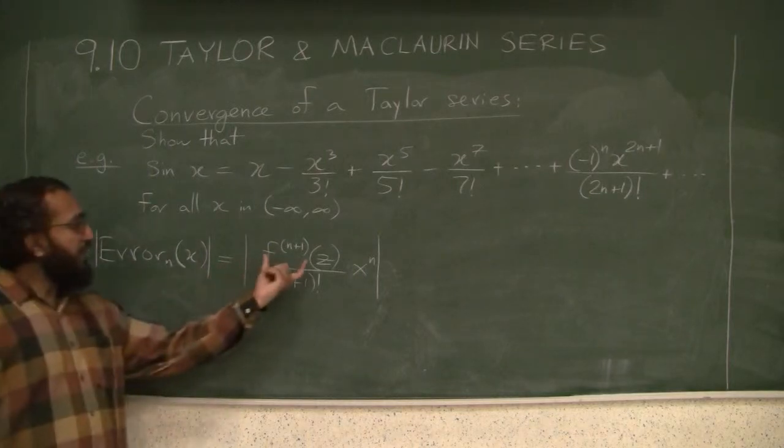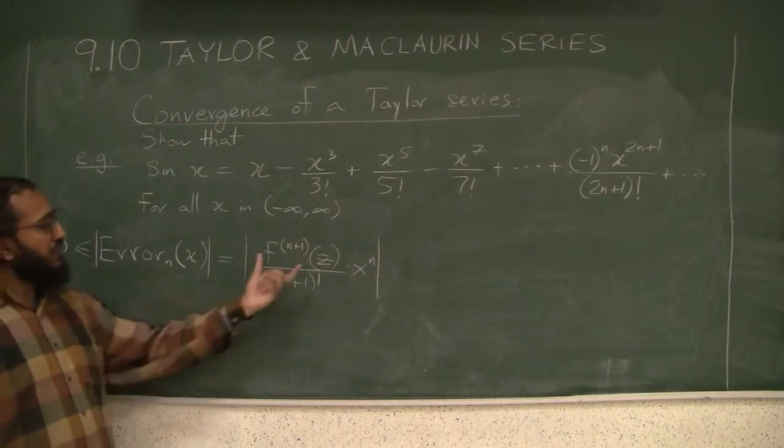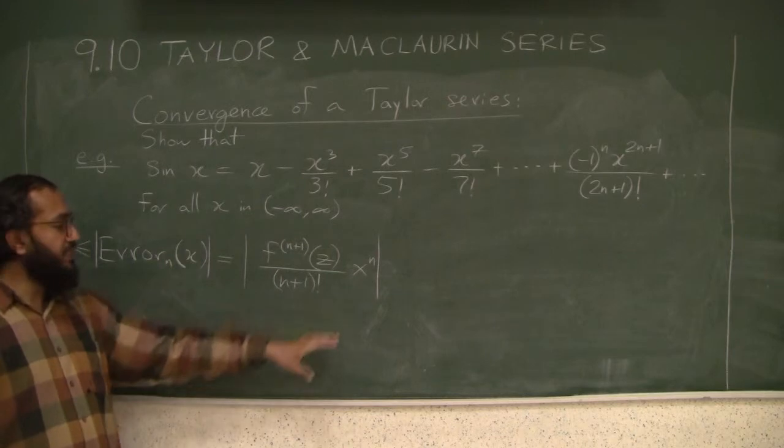Now, the tricky part is always this one. But as we have seen before, what we do is we say, what's the worst value that we could get here that will make this error as big as possible?